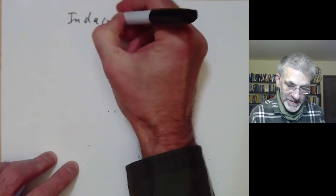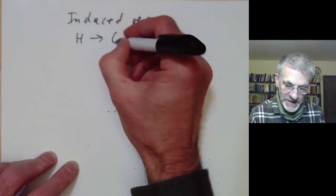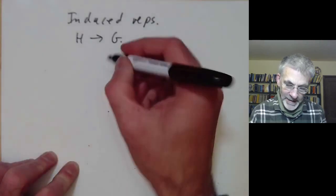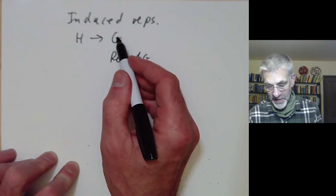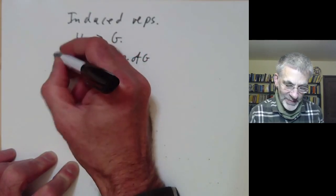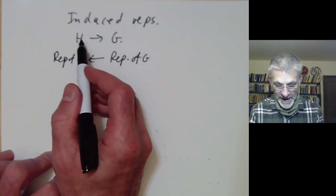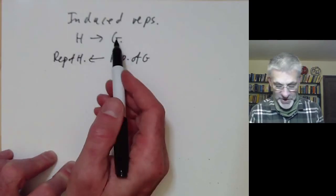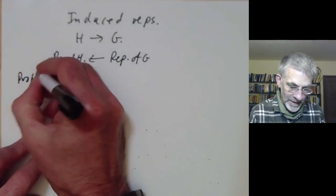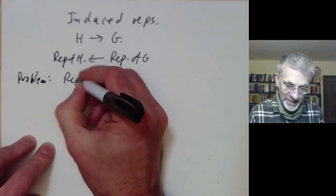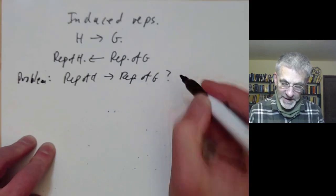Suppose we have a homomorphism of groups from H to G. Then if we've got a representation of G — in other words a vector space acted on by G — it's pretty obvious how to get a representation of H from it, because you can just restrict the action of G to the action of H, even if the map from H to G isn't injective. And we've got the problem: can we find a sort of opposite map? Can we go from a representation of H to a representation of G in some natural way?